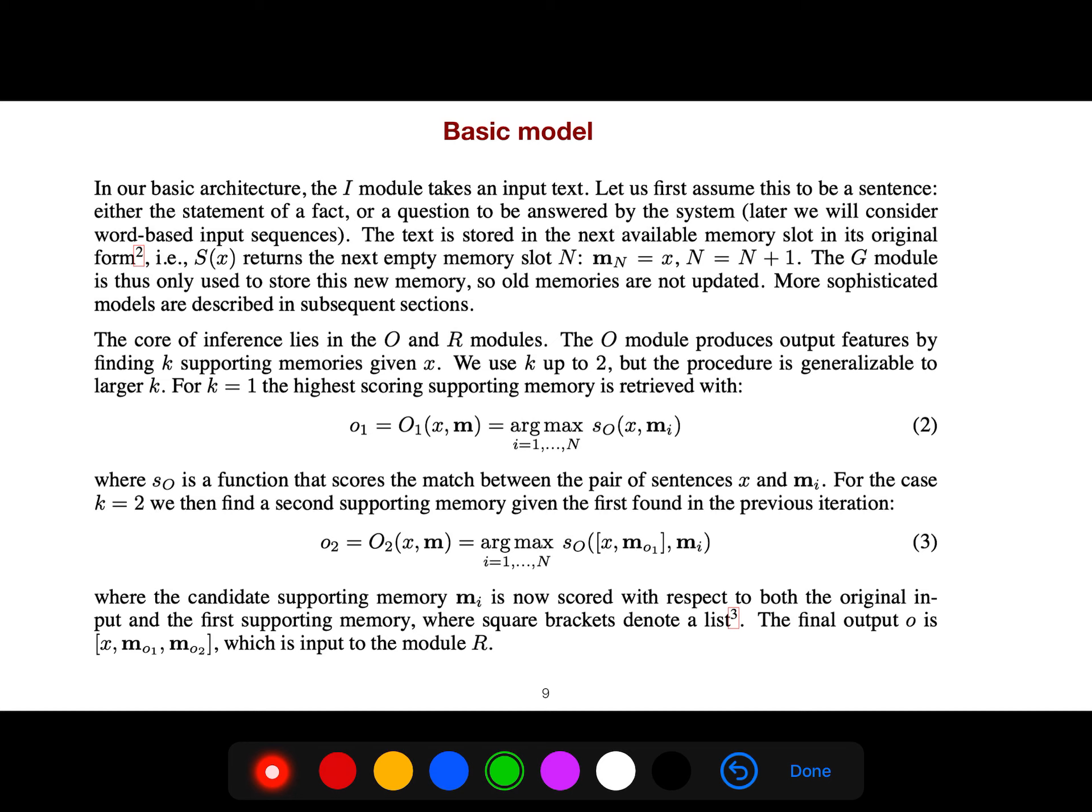We want to know which memories are important. For example, when k is 2, we just want to find k memories that are relevant. We have a scoring function. What is the chance that memory number one is important or memory number two is important?